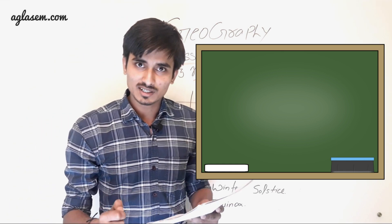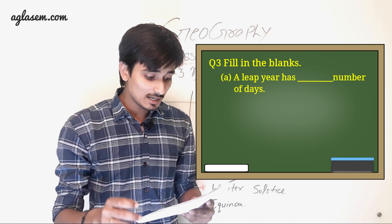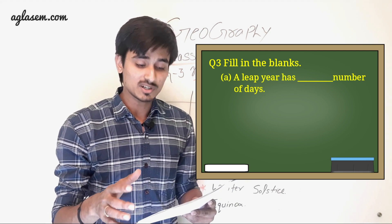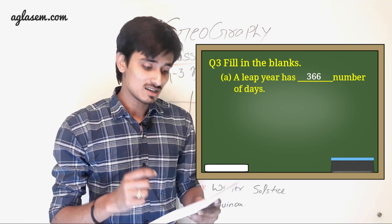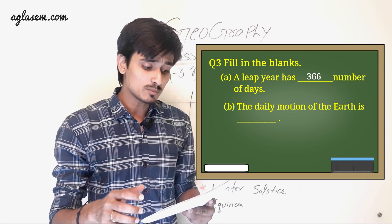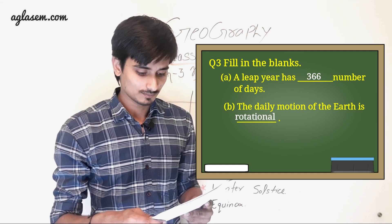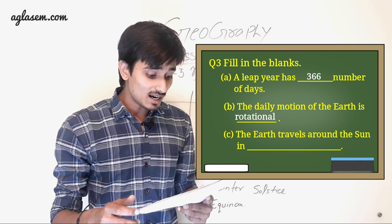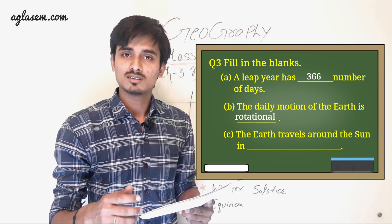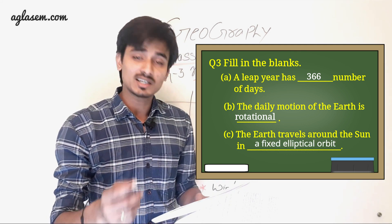Last question is chapter 3rd: Fill in the blanks. A. A leap year has dashed number of days. So answer is 366. B. The daily motion of the Earth is dashed. So answer is rotational. C. The Earth travels around the Sun dashed. So answer is a fixed elliptical orbit.